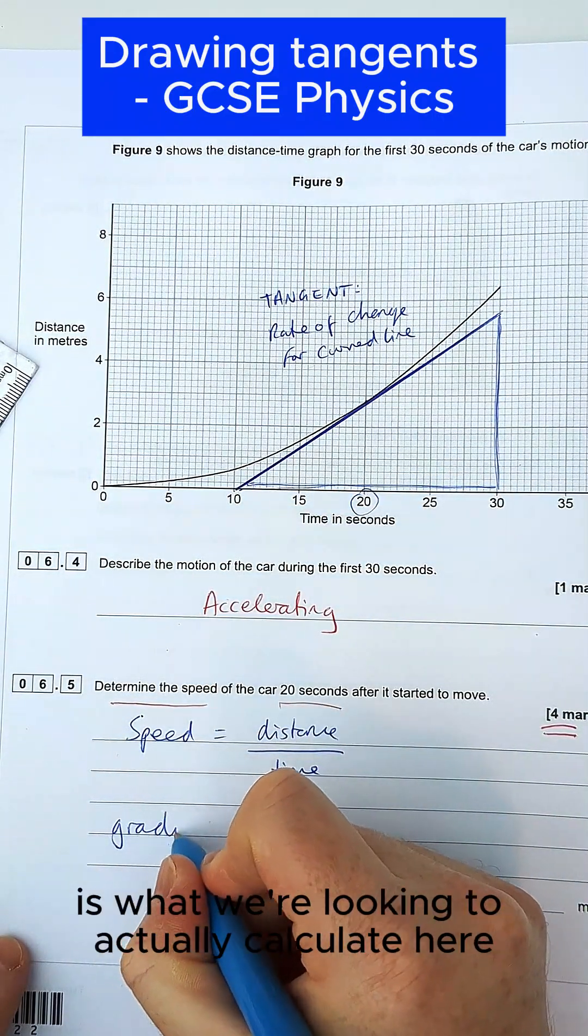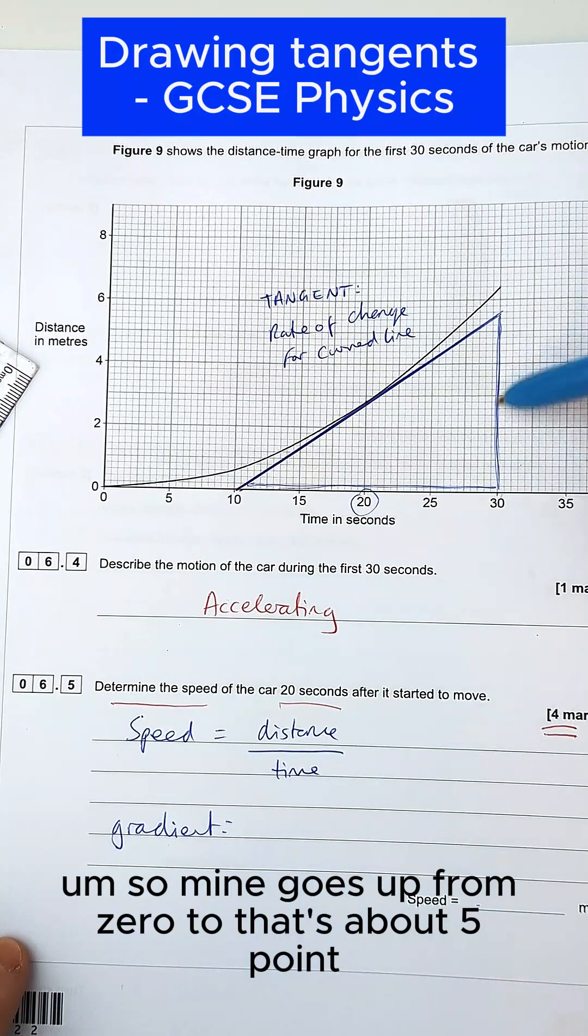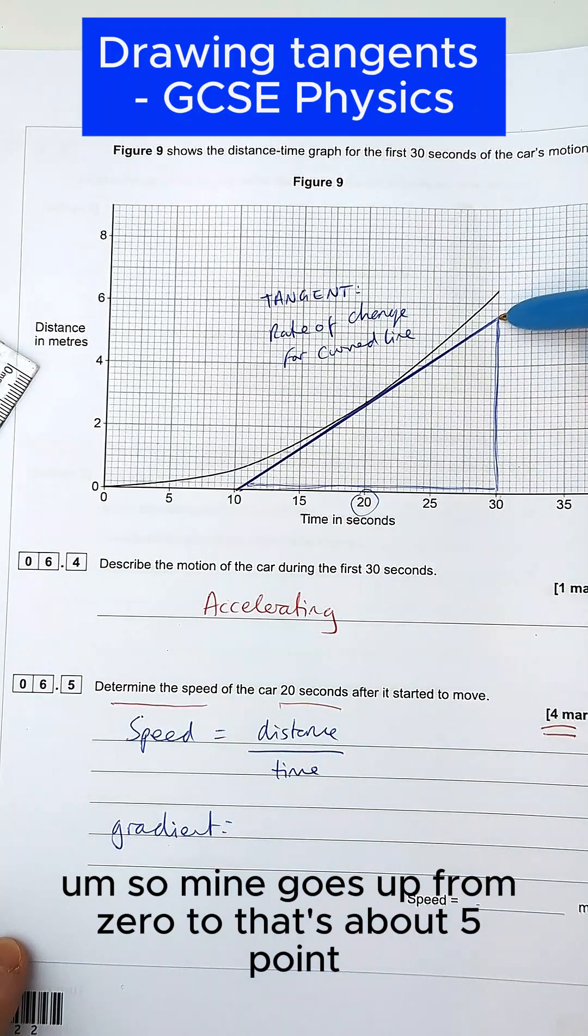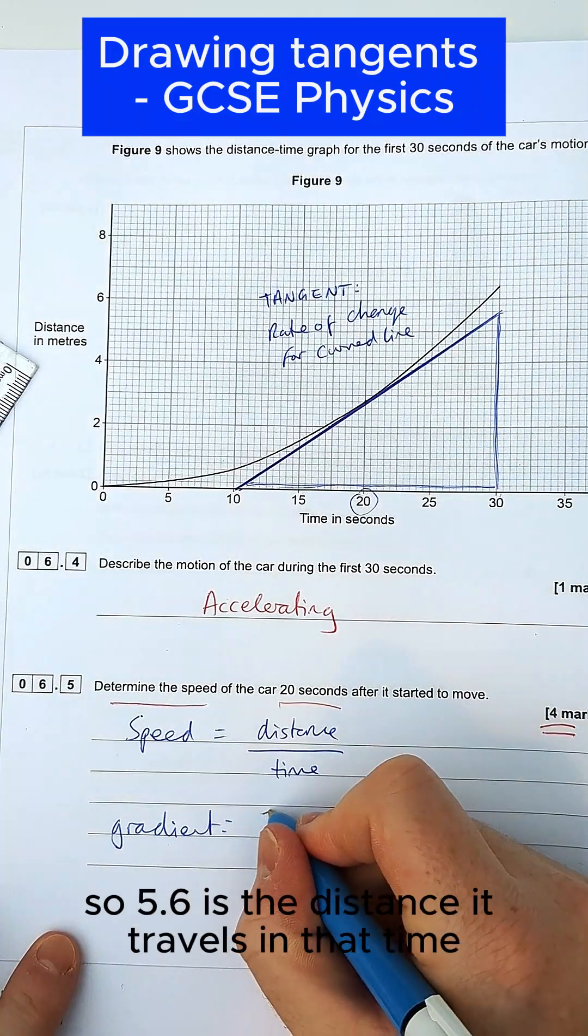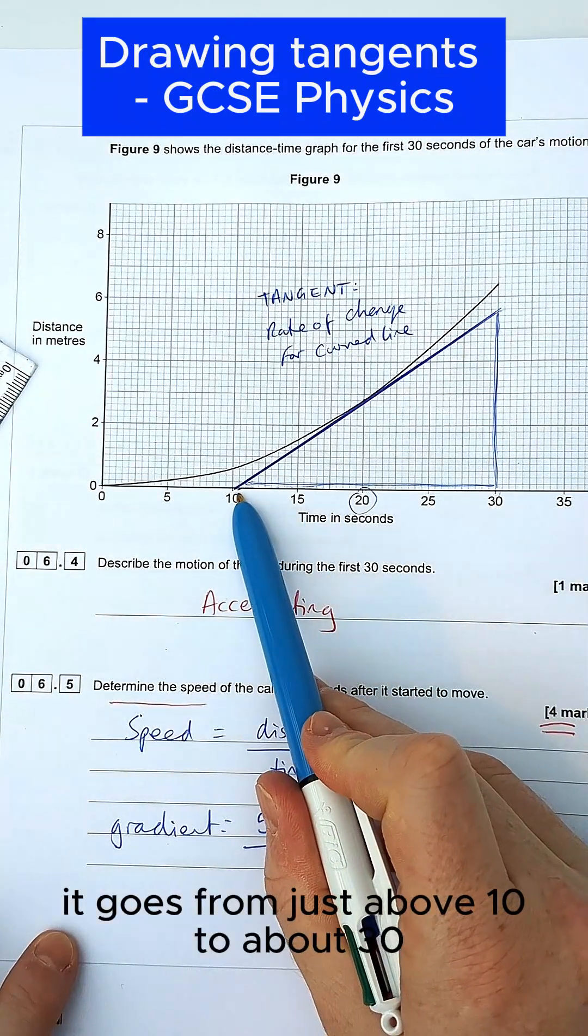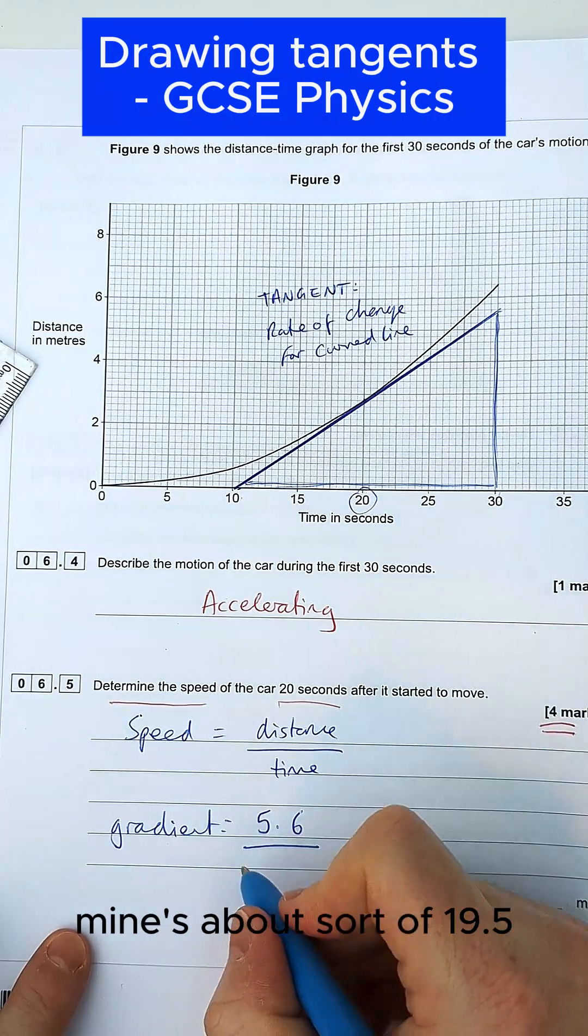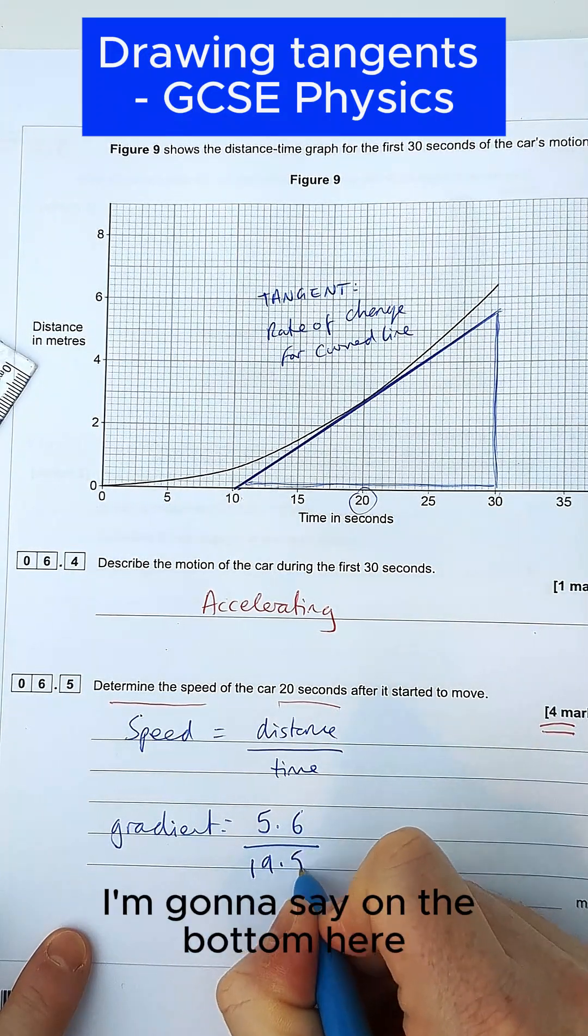So the gradient of the graph is what we're looking to actually calculate here. So mine goes up from 0 to, that's about 5.6, I'm going to say. So 5.6 is the distance it travels in that time. And the time taken, it goes from just above 10 to about 30. So I'm going to say here, mine's about 19.5 on the bottom here.